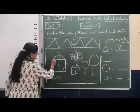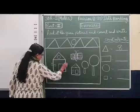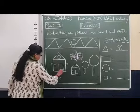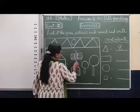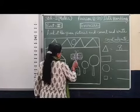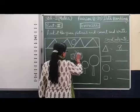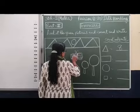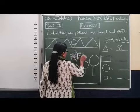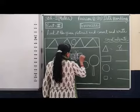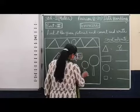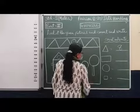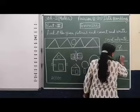Let us verify the rectangle count once again, starting from the house: one, two, three, four, then five, six, seven, eight, nine, ten, eleven, twelve, thirteen — then 14, 15. So 15 rectangles are confirmed.